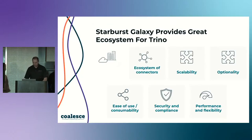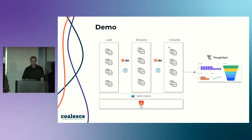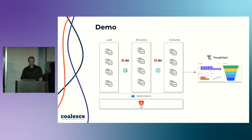Thanks Brian. Now the fun part — a demo. For folks that use dbt, this is pretty familiar: you have land, structure, and consume layers. We're going to use Starburst Galaxy, which is our software-as-a-service product — a managed Trino on top of AWS in this instance — and we're going to use Apache Iceberg, which allows us to do merges, updates, partitioning, and a lot of cool stuff that we've built into the engine. Since ThoughtSpot was here, I'll use them as a BI tool to query everything. I'm going to start at ThoughtSpot — I have a little dashboard pointing against my data, and just so there's nothing up my sleeve, there's nothing there yet.